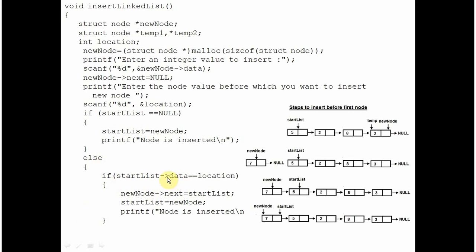But if the linked list already exists and start list is pointing to the first node, you are checking if the user wants to insert before the first node. If so, the data member of start list will match with the location. In that case, you are asking the next pointer of new node to point at start list, and thereafter the start list is set to point at the new node. Because you traverse the linked list beginning from the start list pointer, when start list points at the new node, even this new node will be included in the traversal. So this new node is inserted before the first node and you get the message.